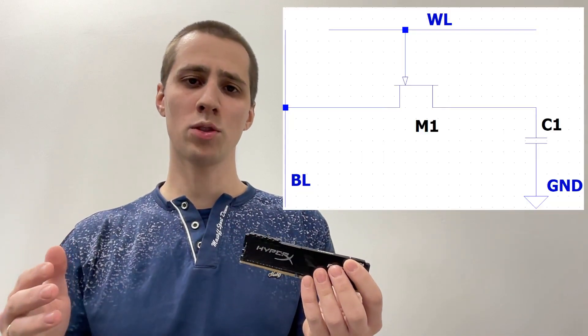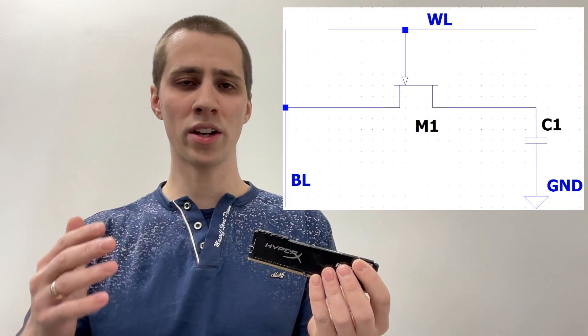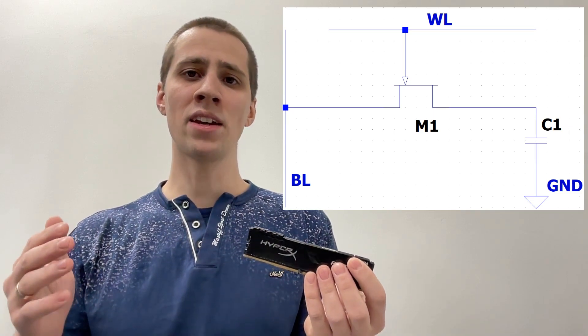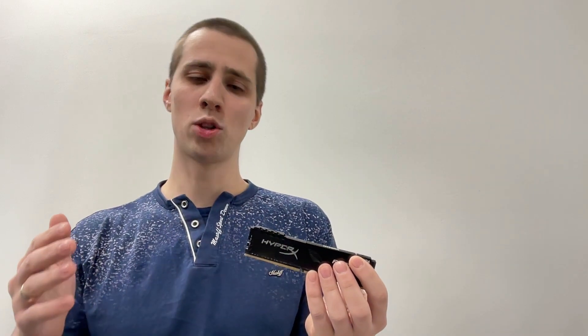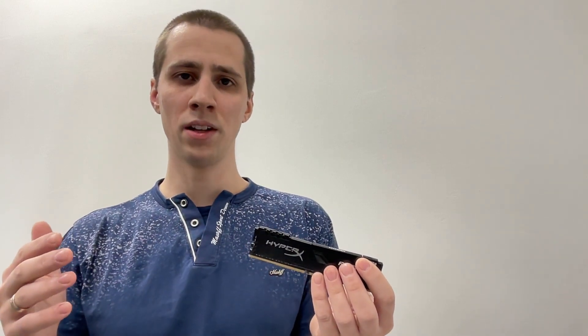In contrast, Dynamic RAM stores bits using a pair of a transistor and a capacitor, making it slower but cheaper to produce. It also provides higher memory density due to its simpler design.